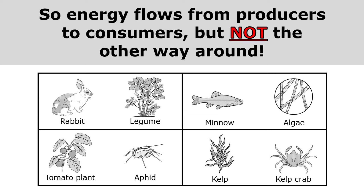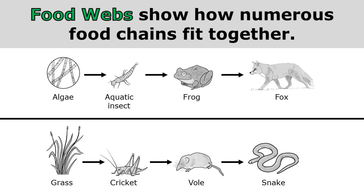My arrow will always point away from the producer and towards the consumer — from the legume to the rabbit, from the tomato plant to the aphid, from the algae to the minnow, and from the kelp to the kelp crab.